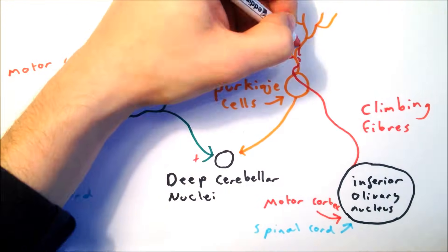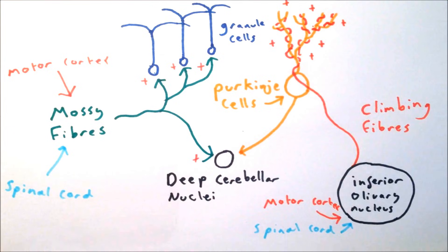Each climbing fiber tightly wraps around the Purkinje cells, forming hundreds of synapses with it. Each Purkinje cell receives input from only one climbing fiber, but each climbing fiber sends an axon to approximately 10 Purkinje cells.